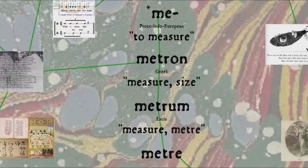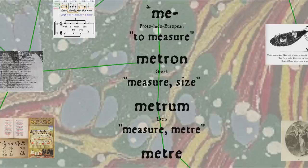As for the word metre, it comes through Latin and Greek, ultimately from the Proto-Indo-European mē to measure, which has a number of other derivatives in English like measure, immense, and month.